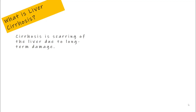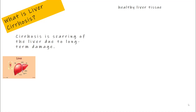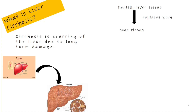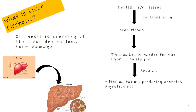Hi everyone, today we are going to learn about liver cirrhosis. So what exactly is liver cirrhosis? It's a condition where the liver gets scarred over time because of long-term damage. Little by little, the healthy liver cells are replaced by hard scar tissue. This scarring makes it harder for the liver to do its normal jobs like filtering toxins, producing proteins, and helping with digestion.